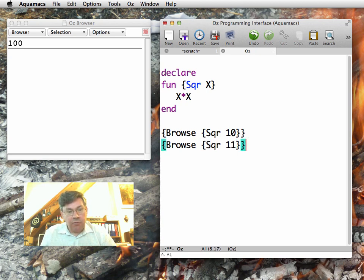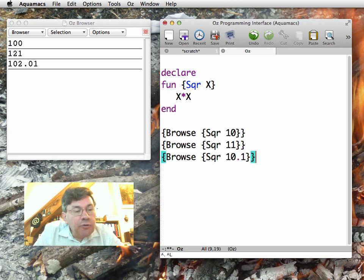Square of 11 is 121. It also works for different kinds of numbers. 10.1 gives 102.01.